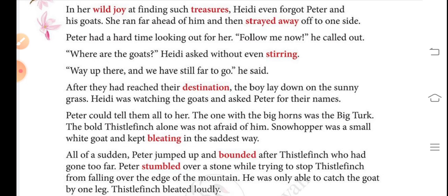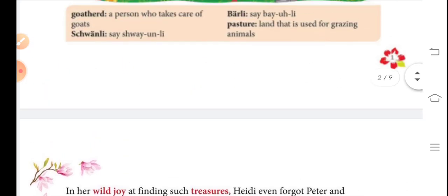Thistle Finch grazes too far ahead and Peter goes to catch him. While trying, Peter gets hurt on a stone. Thistle Finch goes to the edge of the mountain, and Peter asks Heidi for help. She quickly brings fragrant herbs; Thistle Finch starts eating. Peter grabs the goat and pulls her back to the herd. It becomes evening; Heidi calls Peter and says everything looks on fire — a very panoramic view. They return and grandfather waits for them. Heidi tells grandfather about the wonderful fire — the sun's most beautiful rays, saying good night.